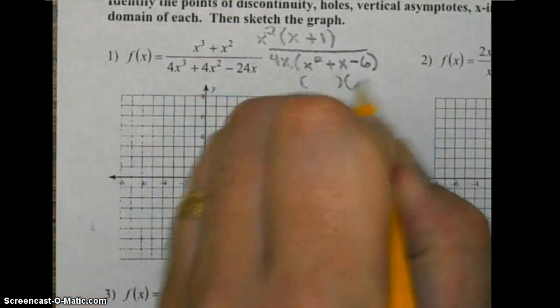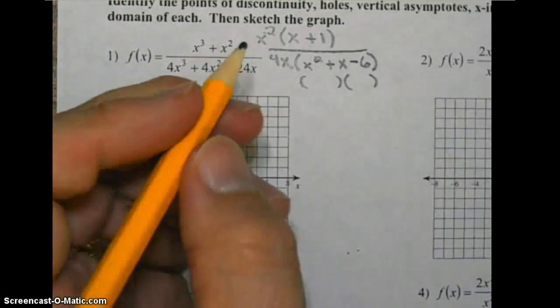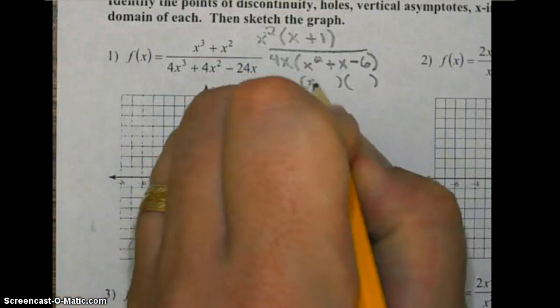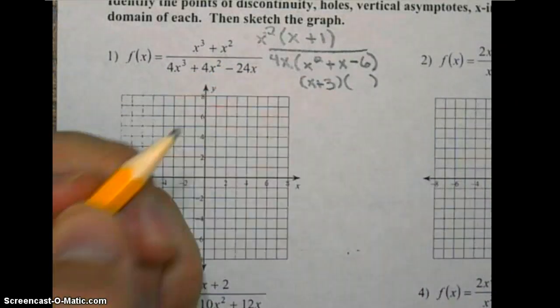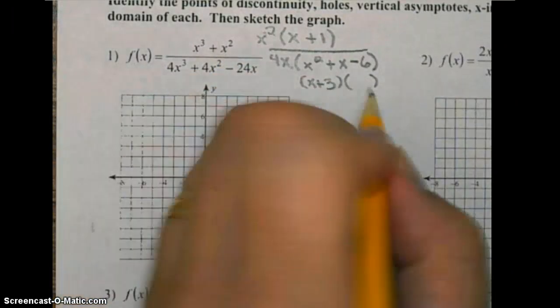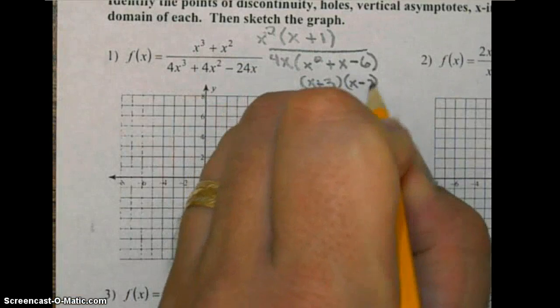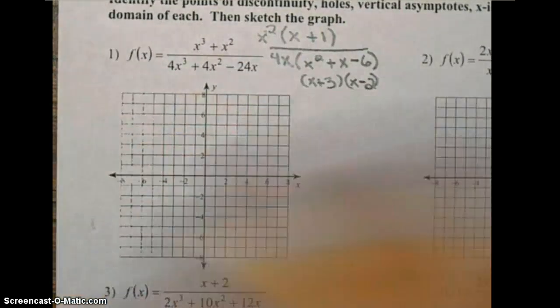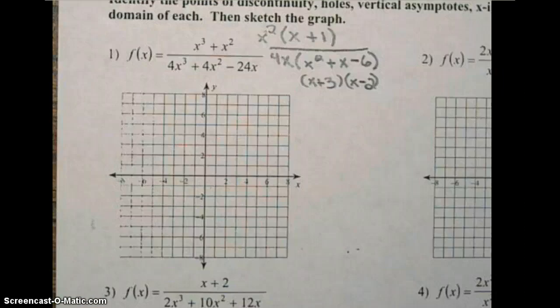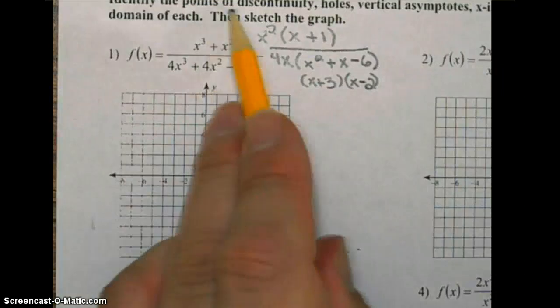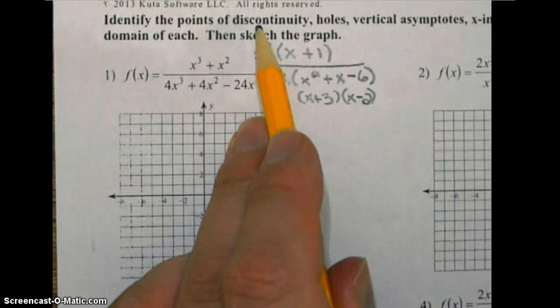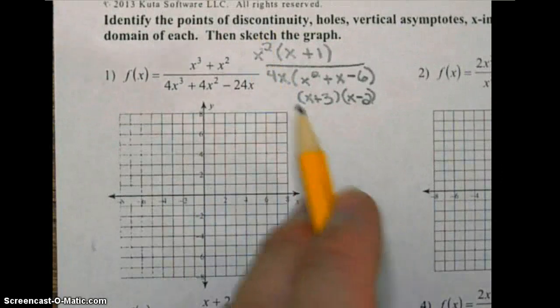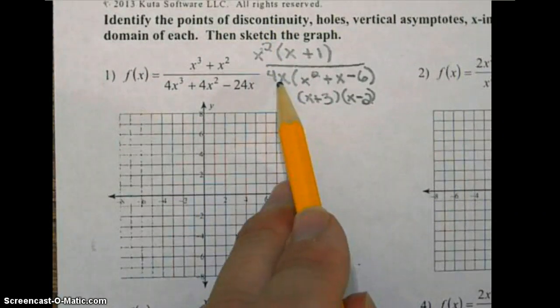Let's go ahead and factor this, that's going to give us (x + 3)(x - 2). All right, let's start with answering some of these questions. It says identify points of discontinuity, so those points are going to be found in the denominator if you set the first factor equal to zero.